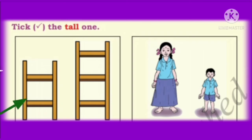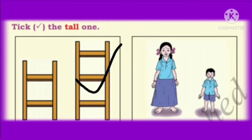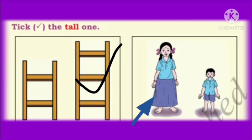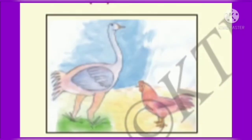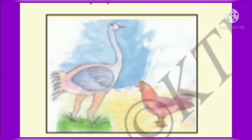So, let us put a tick mark for the second one. Next, observe this picture. Here we have a girl and a boy. Who is taller? Girl is taller than the boy, so let us put a tick mark for the girl. Next, we have ticked the short one. Here we have ostrich and hen. Which one is short? Hen is shorter than an ostrich, so let us put a tick mark for the hen.